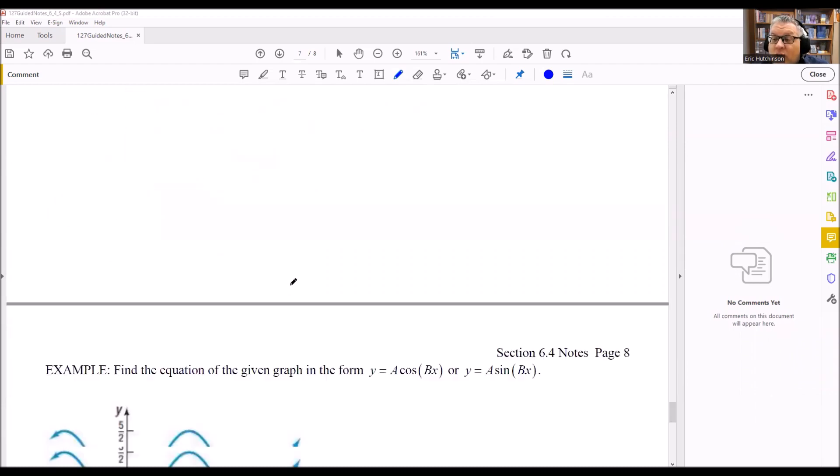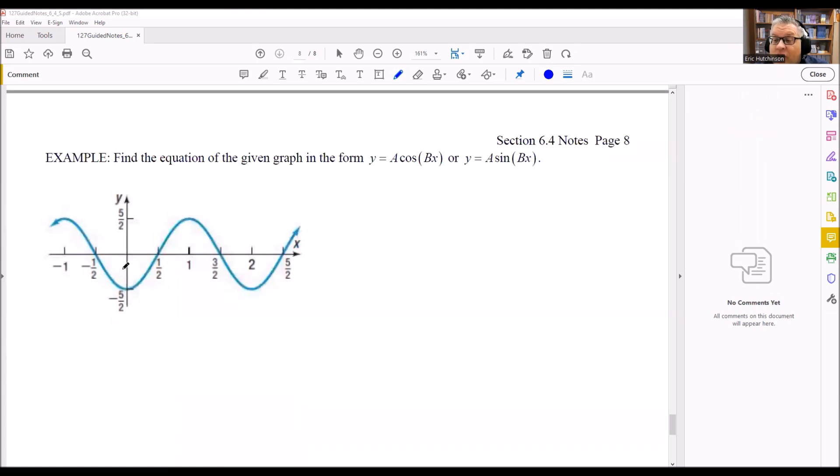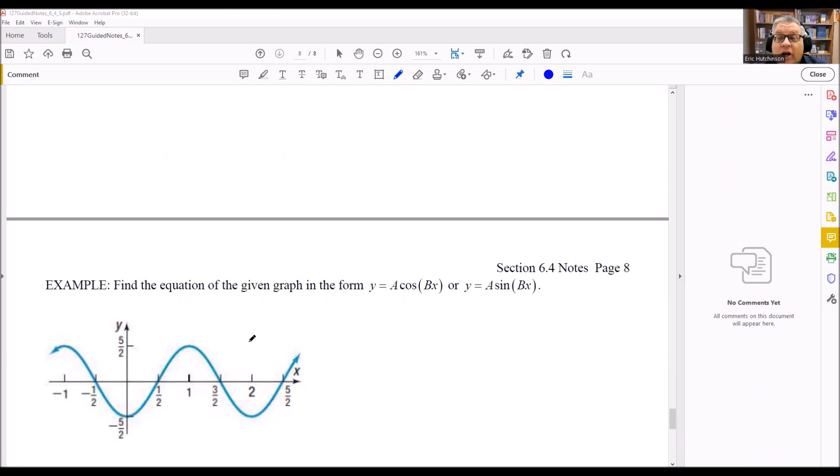But if it crosses anywhere else, like this other graph here, if it crosses anywhere else besides (0,0), it's going to be a cosine graph. So that's how you can tell. You just look at where it crosses. If it crosses through the origin, it's a sine graph. Otherwise, it's a cosine graph.